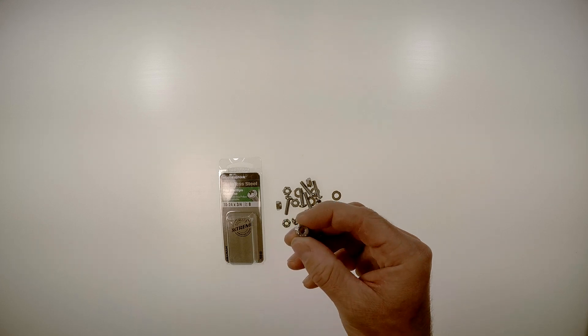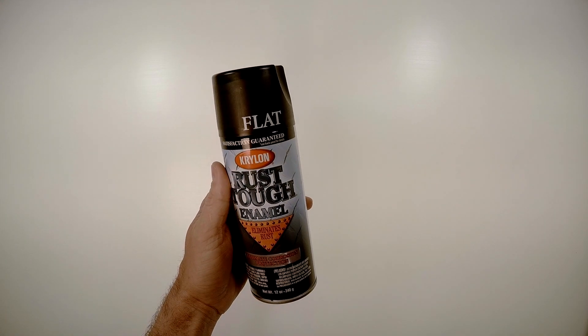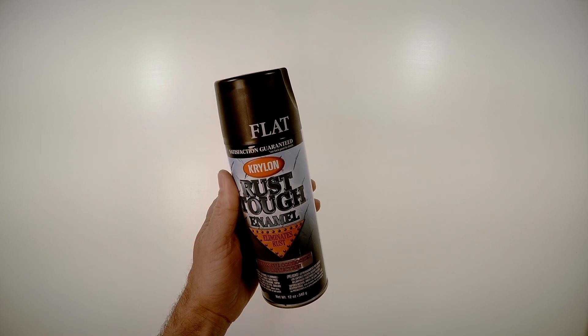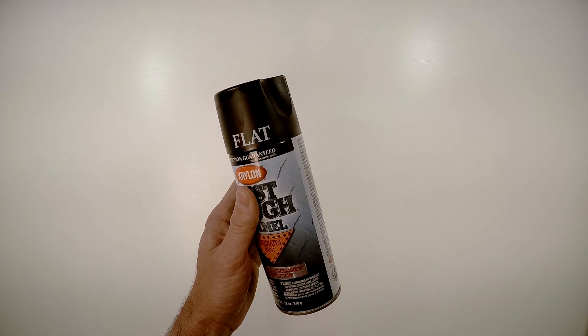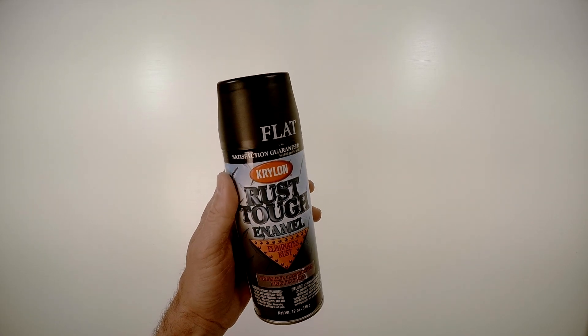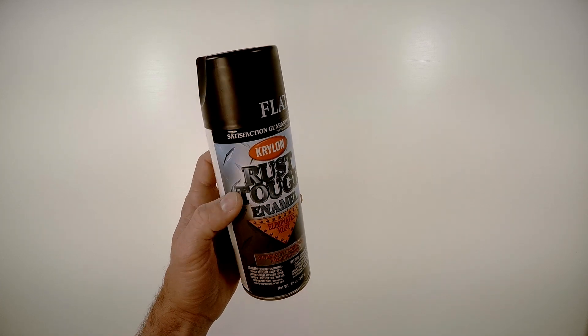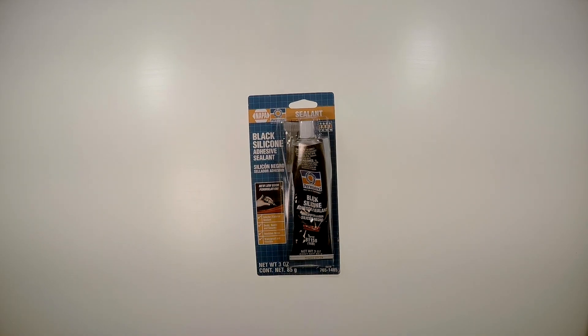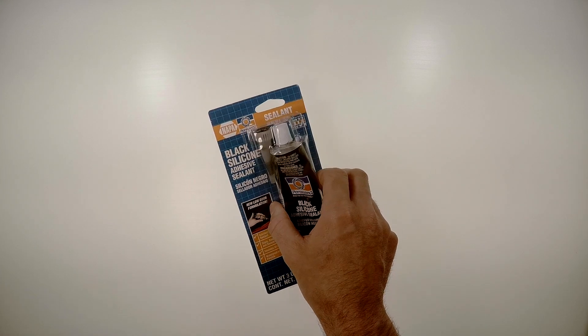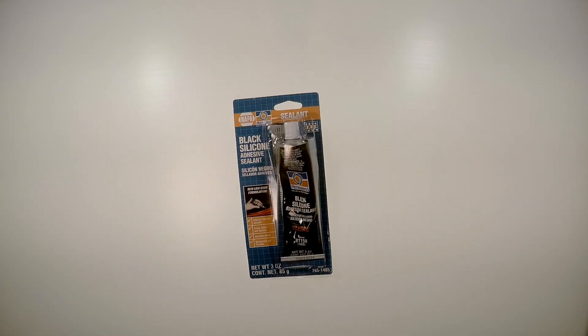Next for the project, you're gonna need some flat black paint. Make absolutely certain that it's flat—you don't want semi-gloss or gloss or anything like that. This didn't even say it was for plastic, but it actually worked well. It doesn't have to be this specific paint, but just make sure it's flat. Then you're gonna need some black silicone adhesive. Make sure that it says it's waterproof—that's obviously what we need. I bought this at Napa Auto Parts Store, but they should be all over. This is the Permatex brand, but it doesn't necessarily have to be that brand. Just make sure it's silicone and it's waterproof. It doesn't even have to be black, but black makes it look better.